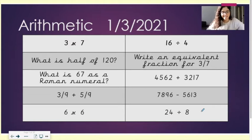3 times 7. What is half of 120? What is 67 as a Roman numeral? 3 ninths plus 5 ninths. 6 times 6. 16 divided by 4. Write an equivalent fraction for 3 sevenths. 4,562 plus 3,217. 7,896 take away 5,613. 24 divided by 8.